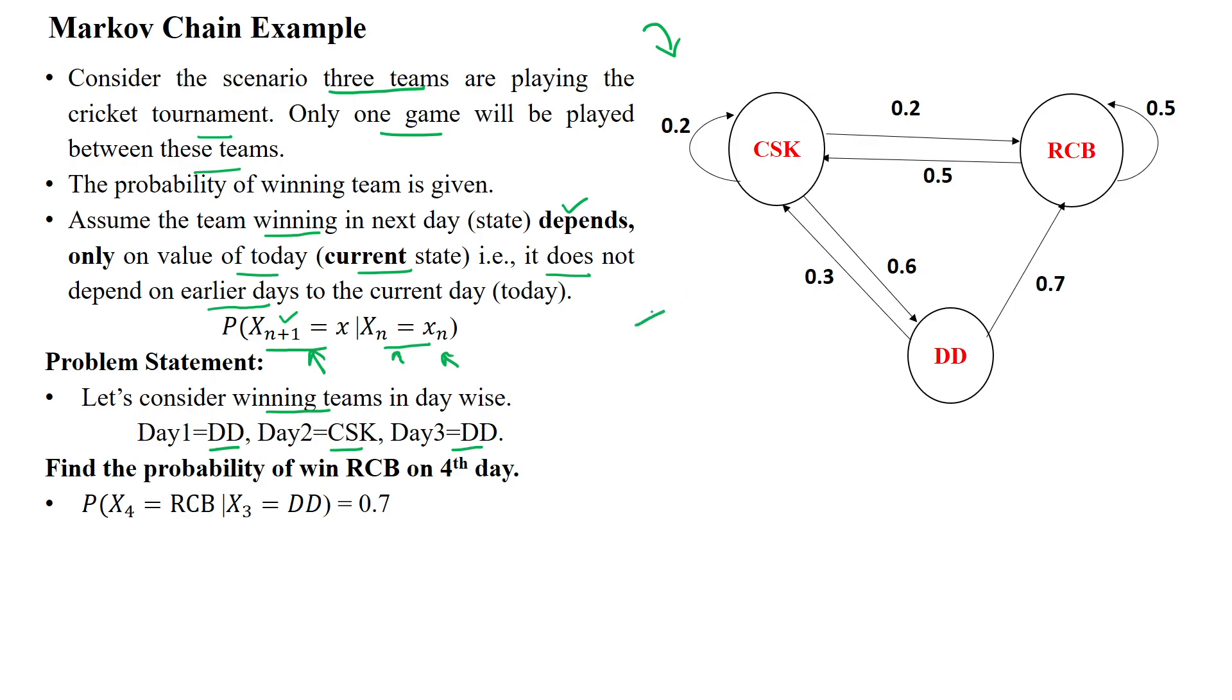Here the transition diagram is given. State transition diagram. Three states: CSK, one state. RCB, second state. Delhi Daredevils, third state.